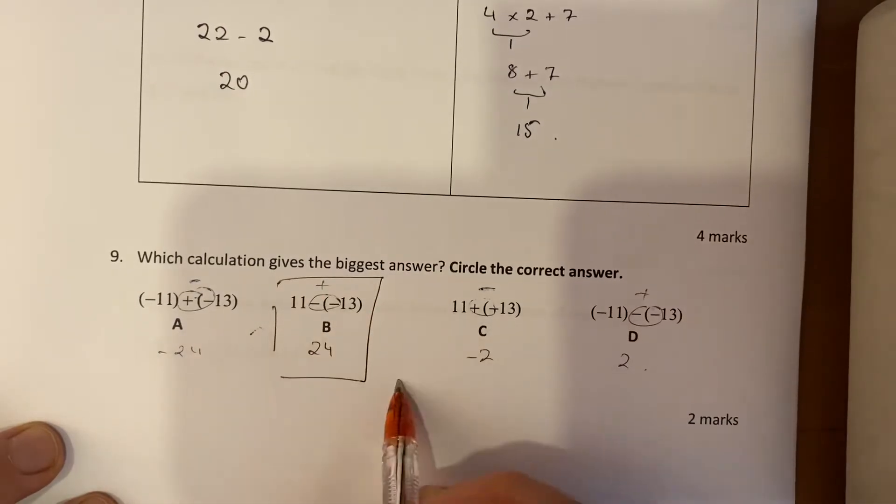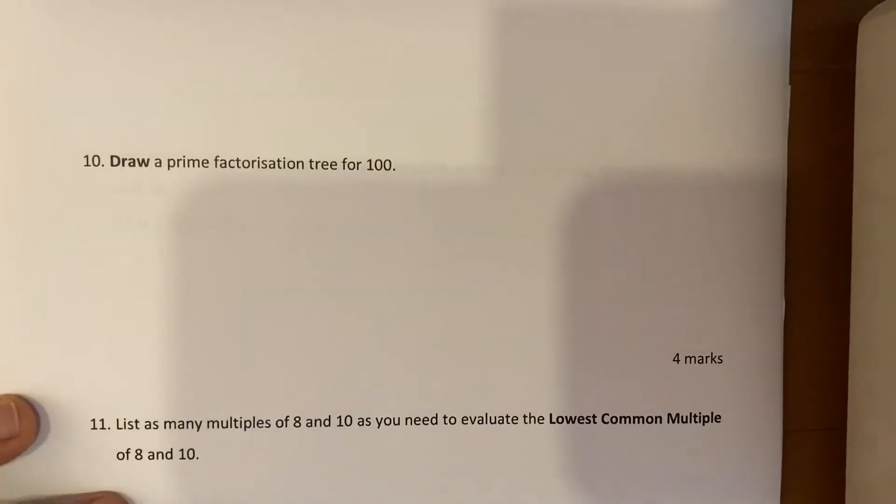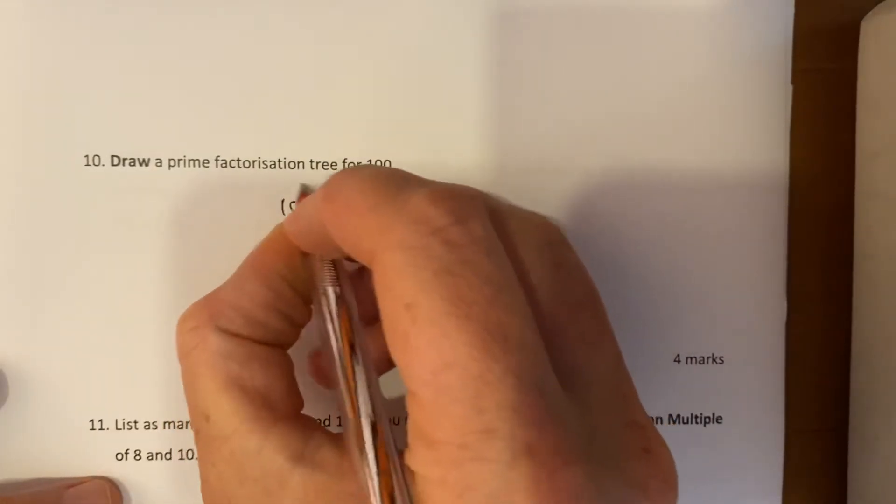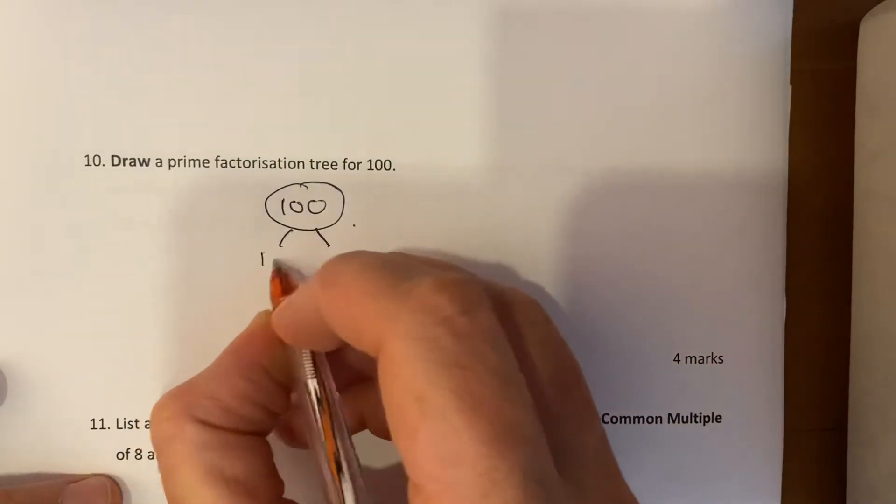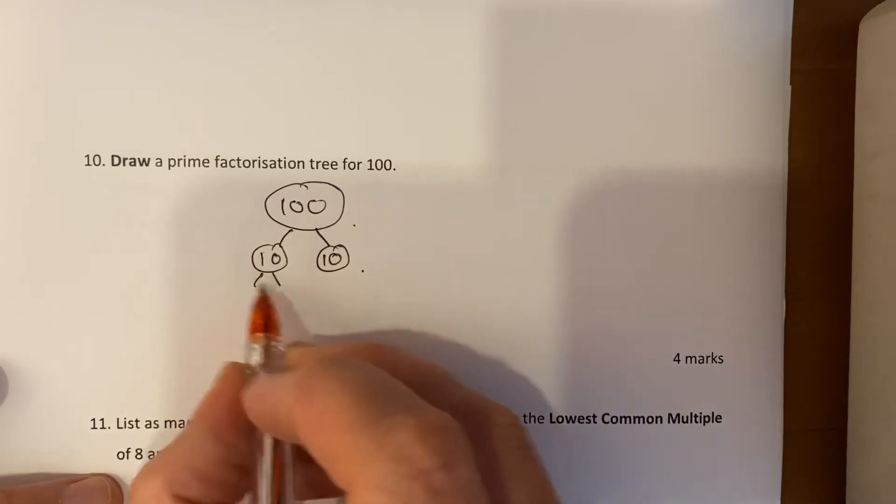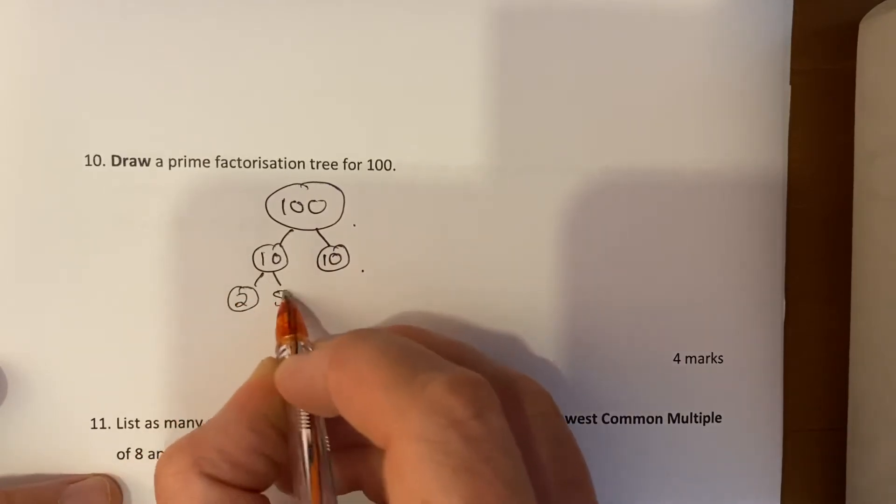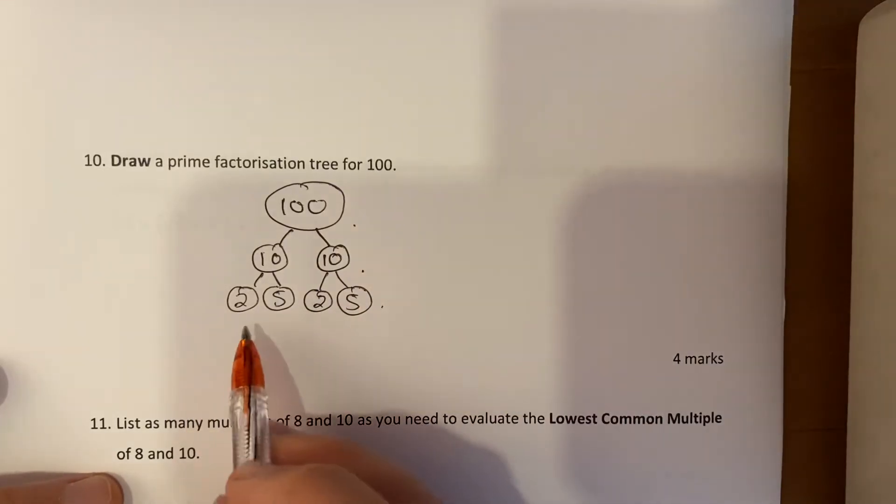Draw a prime factorization tree for 100. So we start with 100 at the top, we think of two numbers that multiply to give 100, maybe think of 10 times 10. And then we think of two numbers that multiply to give 10: 2 times 5, both sides 2 times 5. Do we need to go any further? Well no, because this is prime, prime, prime, prime. Once we reach a prime number we stop, so none of these can be split up as factors anymore.